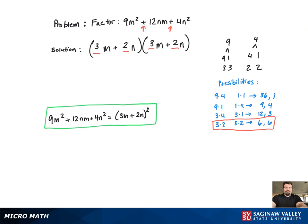Now we can see the factored form is 3m plus 2n, whole quantity squared. And that's it.